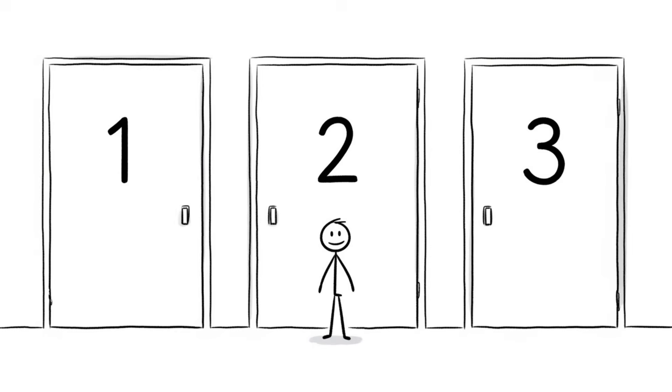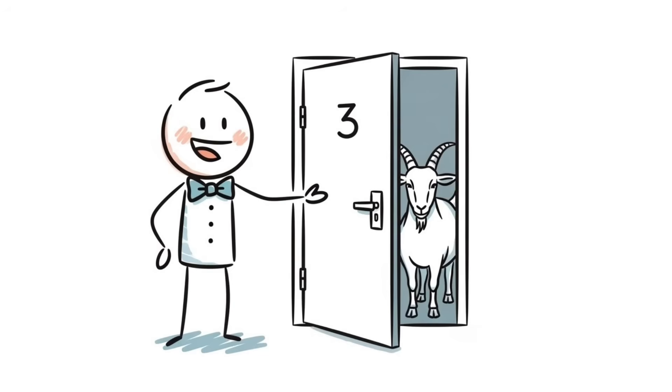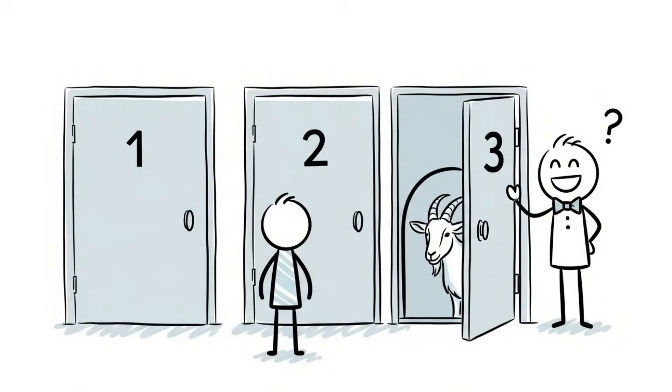Number two, the Monty Hall paradox. You're on a game show. You are presented with three doors in front of you. One hides a car and two hide goats. You pick door number one. The host, who knows what's behind every door, opens door number three to reveal a goat. Now he asks if you want to switch to door number two or stick with your original choice.